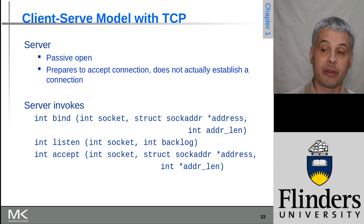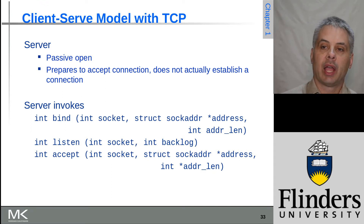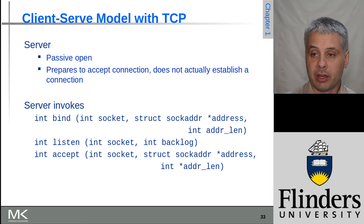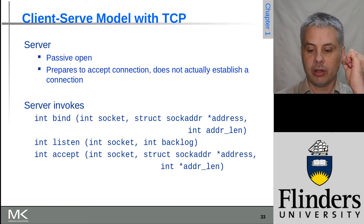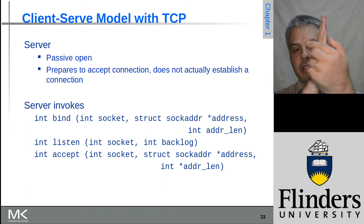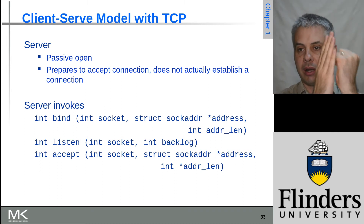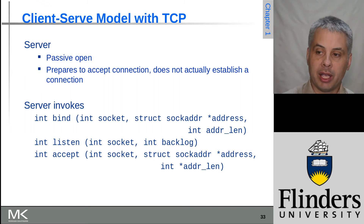We'll look at the inbound connection path first — this will be for a server waiting for something to come in and telling other hosts on the network that they can connect to it. For this we have three important calls: bind, listen, and accept. Bind tells the operating system to connect this socket to its network surface so that connections can come in.